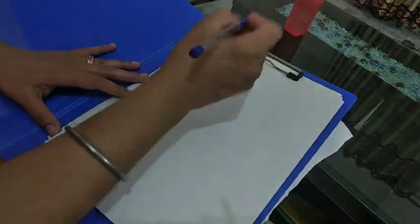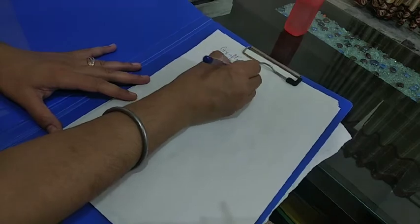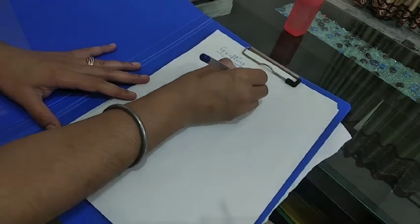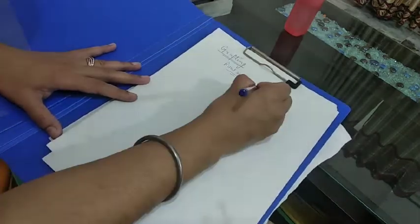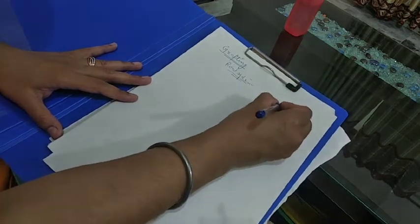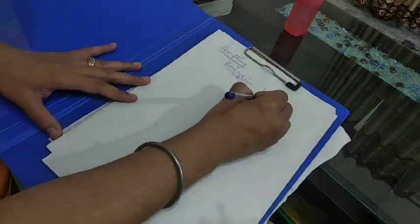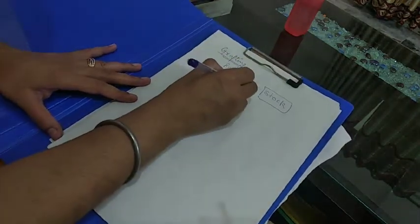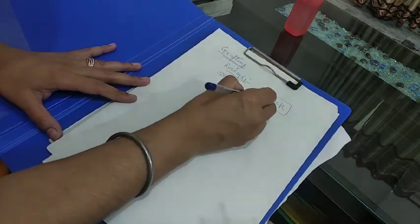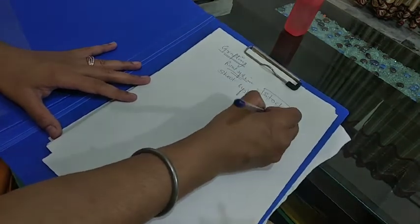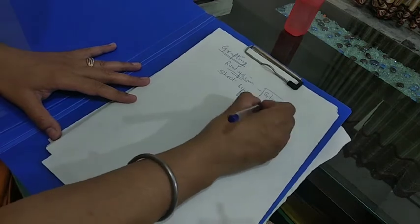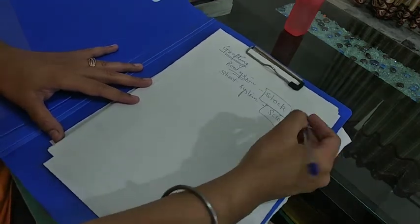The plant from which we take the root system because its root system is strong, we call it stock. The plant from which we take the shoot system because it has a strong shoot system, we call it scion. Stock and scion - we join them together.